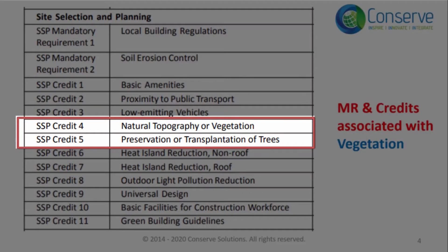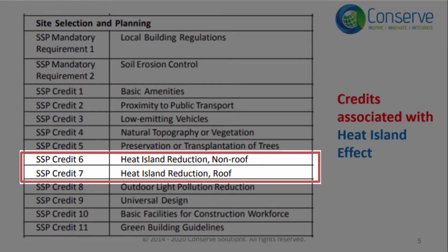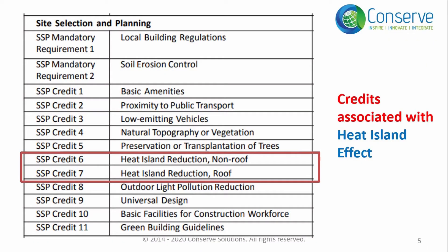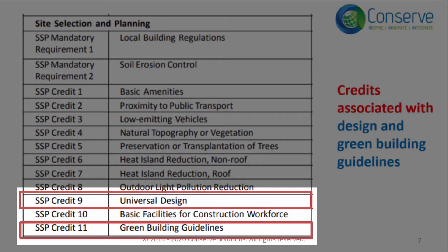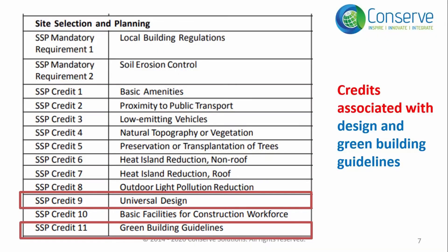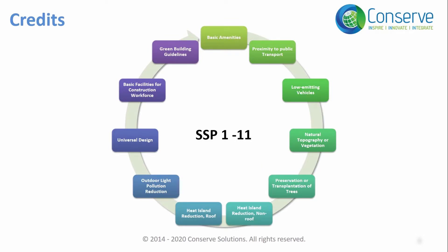Credit 4: natural topography or vegetation, and credit 5: preservation and transplantation of trees, are associated with vegetation on the site and will be discussed together. Credits 6 and 7 are associated with the heat island effect and will be discussed together. Credit 8 is associated with light pollution and will be discussed separately. Credits 9 and 11 are associated with accessibility in design and green building guidelines and will be discussed together.